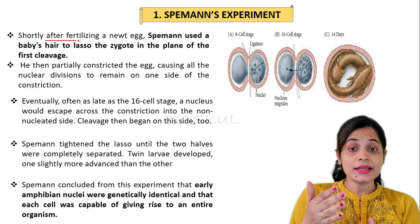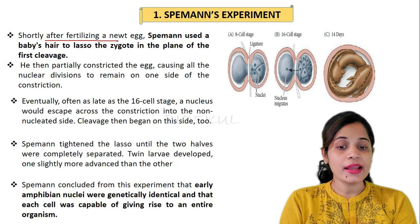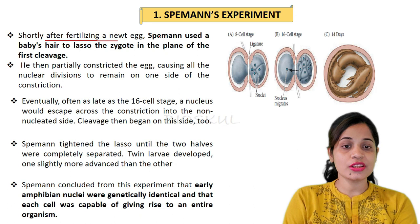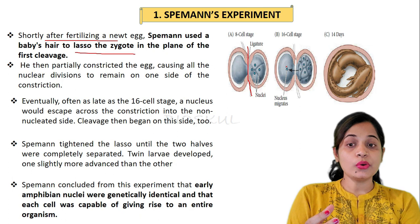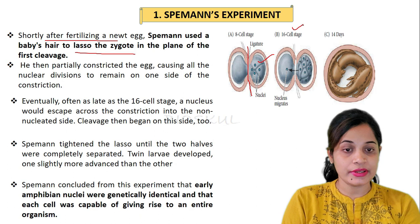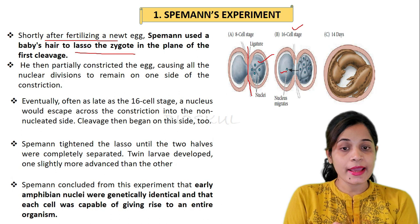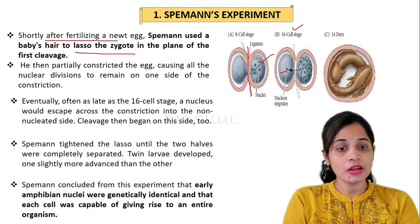In the first experiment, Spemann demonstrated that newt blastomeres have identical nuclei and each is capable of producing an entire larva. He took a newt egg shortly after fertilization and used a baby hair to lasso the zygote in the plane of the first cleavage. He then partially constricted the egg, causing all nuclear divisions to remain on one side of the constriction.